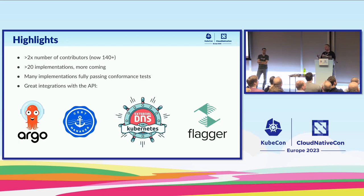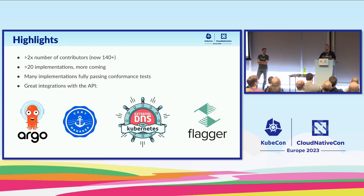Gateway API is the Kubernetes SIG Network subproject that is aiming to build out a new, portable, extensible, role-oriented replacement for Ingress and Service-type load balancer, amongst other network constructs. That's what we're aiming to do.